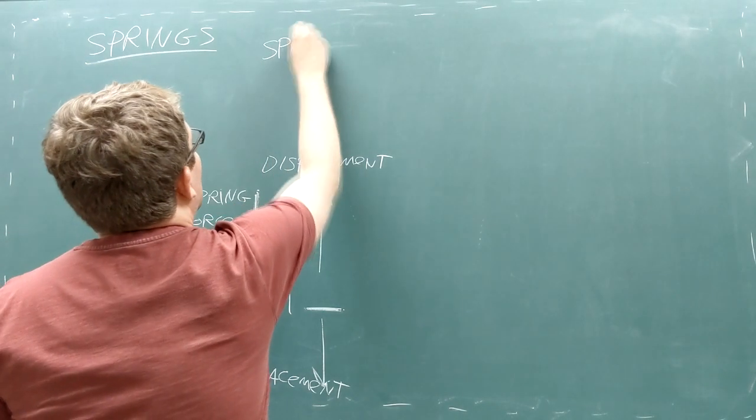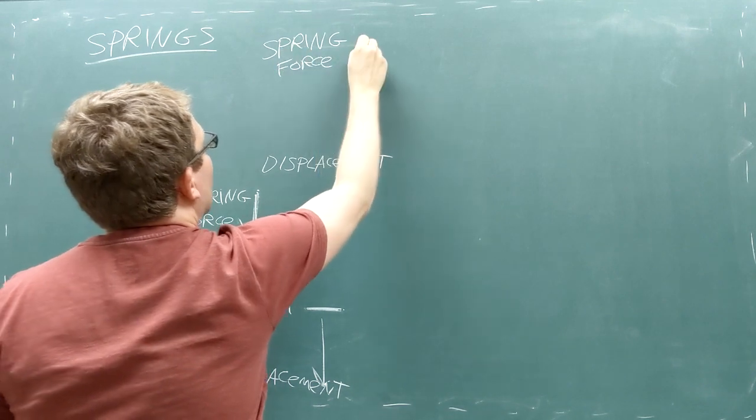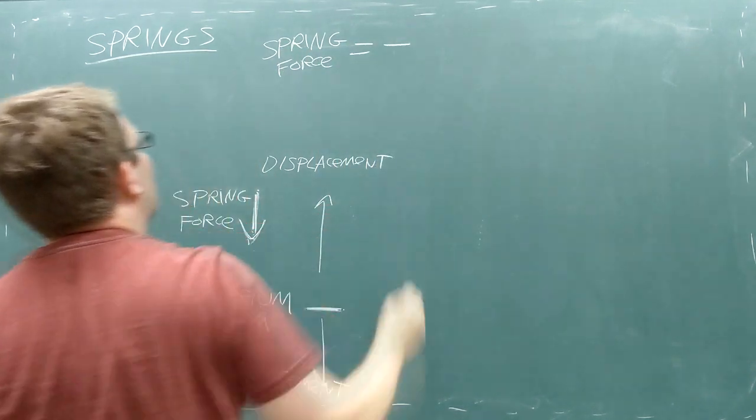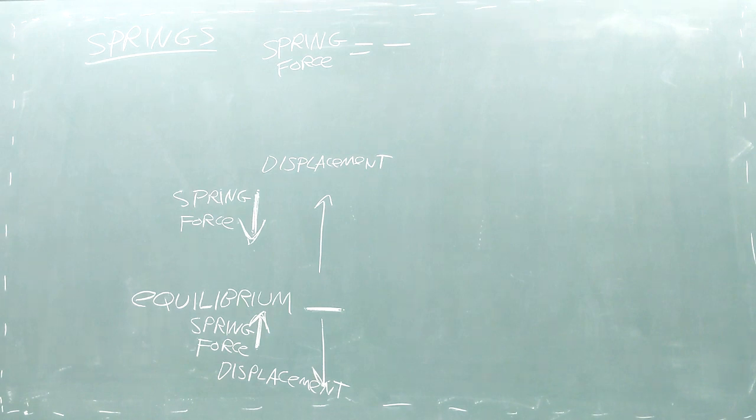We calculate this force using three factors. First, there's a negative sign indicating that the spring force always pulls the object back to equilibrium. If you leave off this negative sign, the universe will explode.